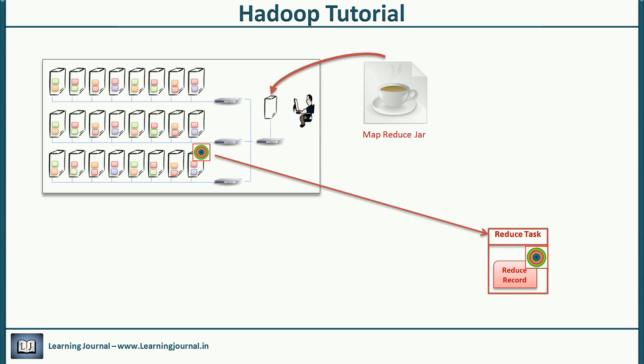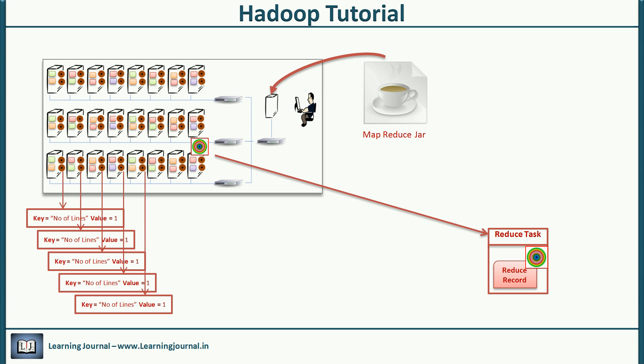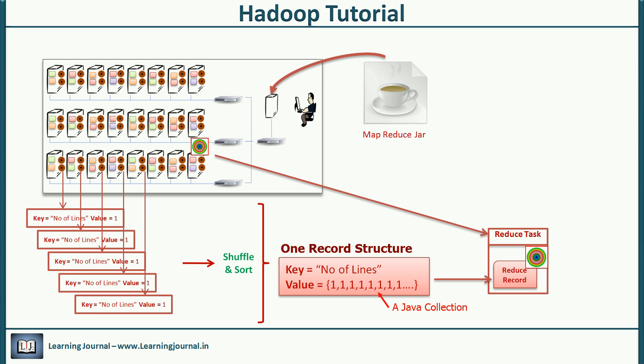The framework will also create one or more tasks for the reducer. By default, there's only one reduce task. However, you can configure it to a higher number based on your requirement. For a line count example, we don't need more than one reduce task because we want to calculate the sum at only one place. So we want to understand how the count reaches the reduce task. The framework collects all the output records from every mapper. It sorts them and merges them by key to prepare a record for the reducer. The final record structure is something like this. Since we wrote only one key for the mapper, we get only one record for the reducer.